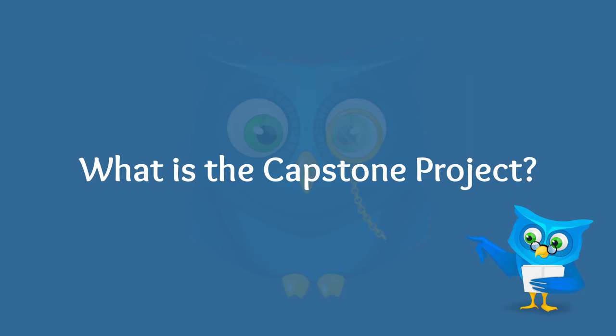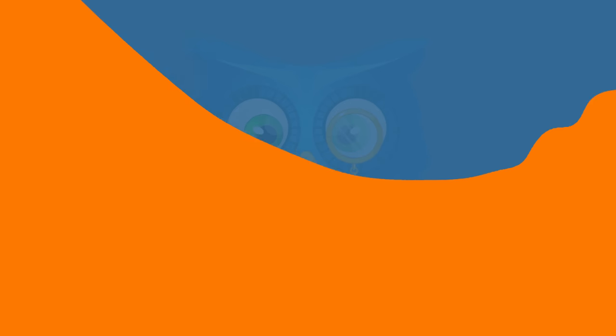My name is Steven and in this video we're going to look at what a capstone project is. A common question any student has, especially in high school, is the definition of a capstone project. According to the University of Virginia, this task is a two-semester project where students must independently research a topic to obtain a deep understanding of the subject matter. A capstone project is a culminating assignment on which students usually work during their final year in school or at the end of the academic program.